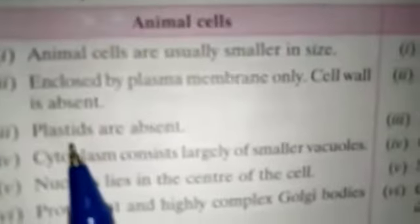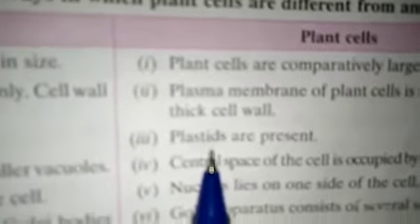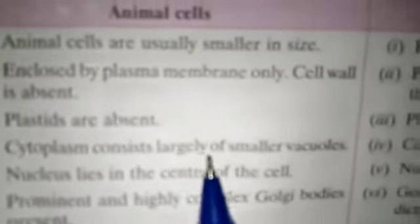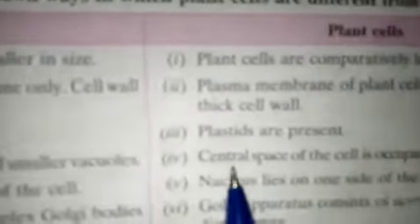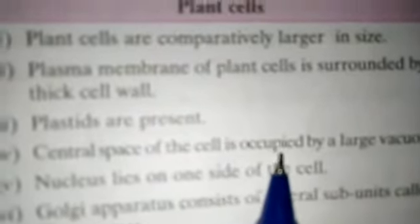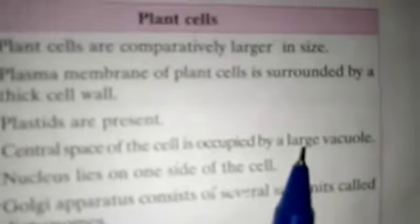Next, 'Plastids' — plastids are color pigments, which are absent in animal cells, while plastids are present in plant cells. Chlorophyll is a type of plastid that gives green color to plants. Next, 'Cytoplasm': in animal cells, cytoplasm consists largely of smaller vacuoles, whereas in plant cells, the central space of the cell is occupied by large vacuoles.